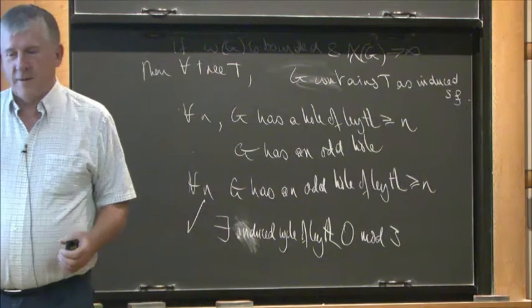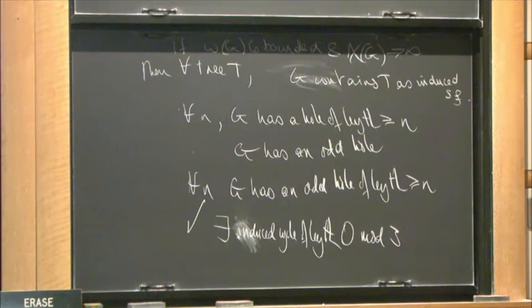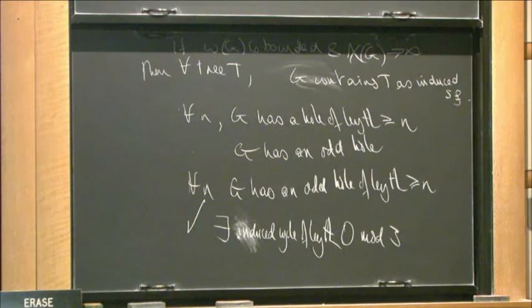This is now a theorem and I want to tell you the proof. What was known before: first, this is trivial — if you don't have any odd holes and your clique number is two, then you don't have any odd cycles at all. Because as soon as you have an odd cycle, take the shortest odd cycle, that's induced.